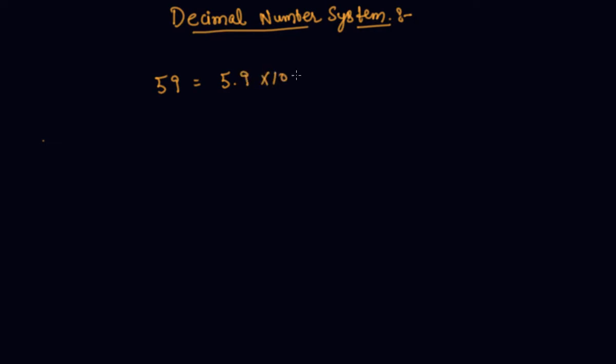I can write this in standard form, which means there should be only one digit before the decimal. If I'm given 5900, I will write 5.9 times 1000.